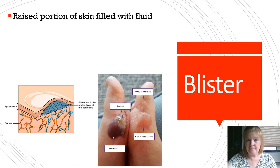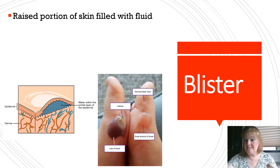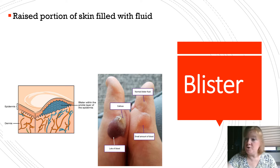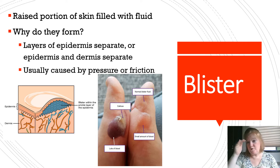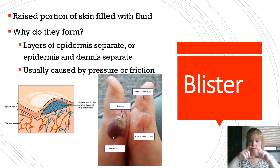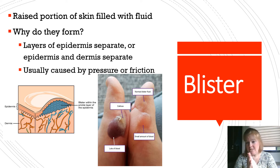A blister is a raised portion of skin filled with fluid — sometimes clear fluid, sometimes blood. Why would there be blood? Well, if the blister involves the dermis, there will be blood. If it only involves the epidermis, there will be no blood because the epidermis is avascular. Either the layers of the epidermis separate — stratum corneum, lucidum, granulosum, spinosum, basale — or there's separation between the dermis and the epidermis at the epidermal ridges. This is usually caused by pressure or friction.